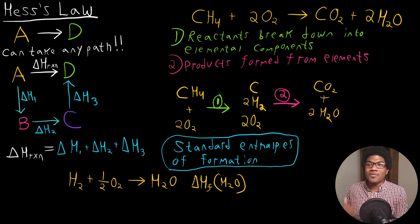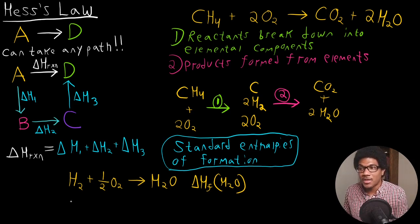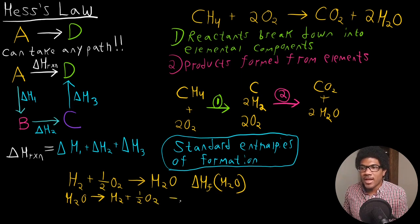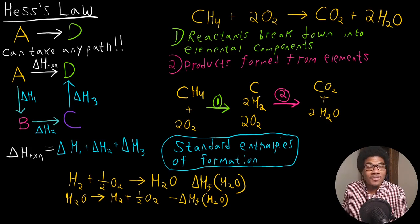If we have all of these enthalpies of formation, then we have everything we need to imagine any chemical reaction being broken down into elemental components and then having the products formed from those elemental components. Keep in mind that if we have the enthalpy of formation, then we also have the enthalpy of decomposition. So if we had the process H2O being broken down into H2 plus one half O2, this process would just be the negative of the delta H of formation. If we have the enthalpy of formation for H2O, then we have the enthalpy associated with this decomposition as well. With all of that, we can envision any chemical reaction being broken down and reassembled in this way.